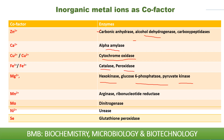Manganese ion (Mn²⁺) is required for arginase and ribonucleotide reductase. Molybdenum is required for dinitrogenase enzyme. Nickel is required for urease enzyme. Selenium is required for glutathione peroxidase. These are the important metal ions and their enzymes required during metabolic pathways.